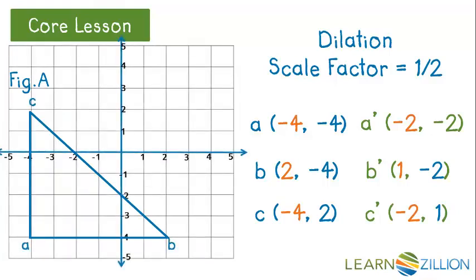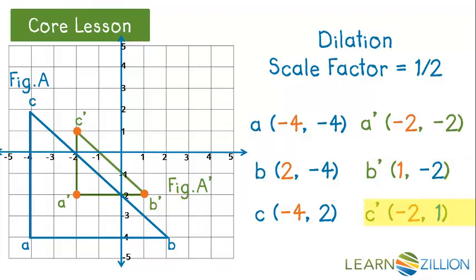Putting it on the graph: A prime is (−2, −2), B prime is (1, −2), and C prime is (−2, 1). We can see that the image is the same shape but a different size than the pre-image, so we can say it is similar to, but not congruent to, its pre-image.